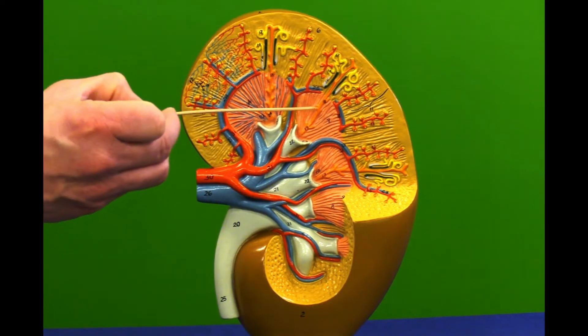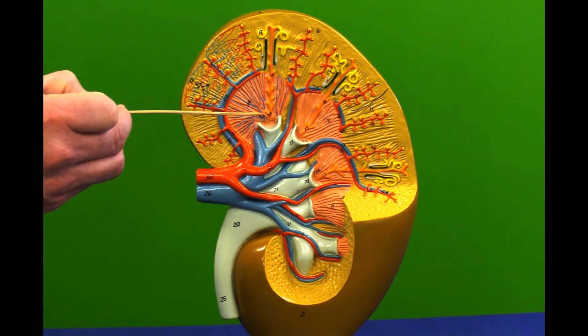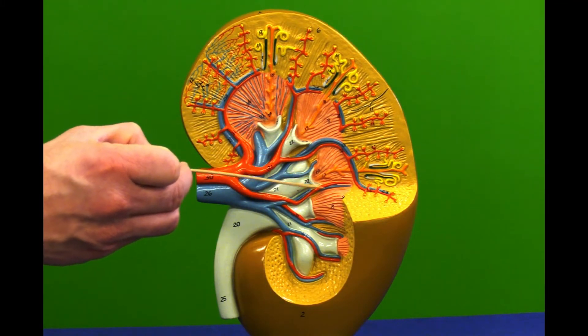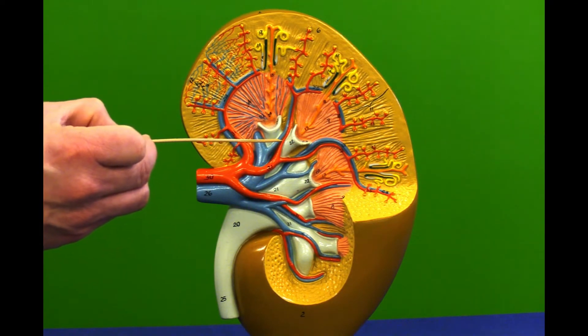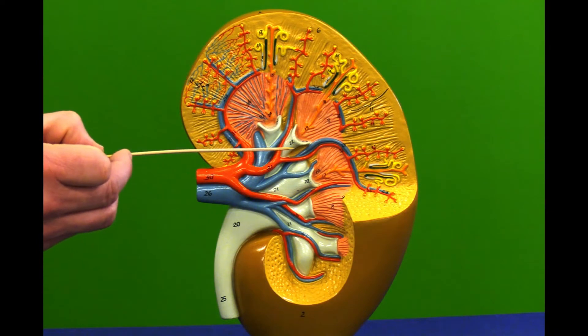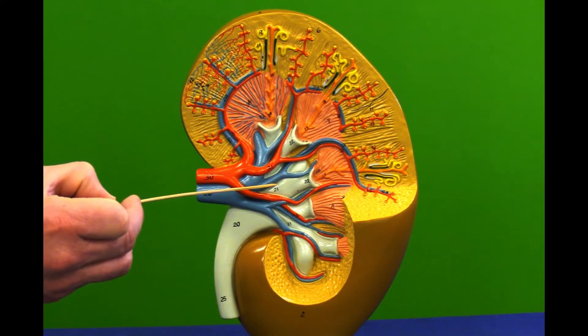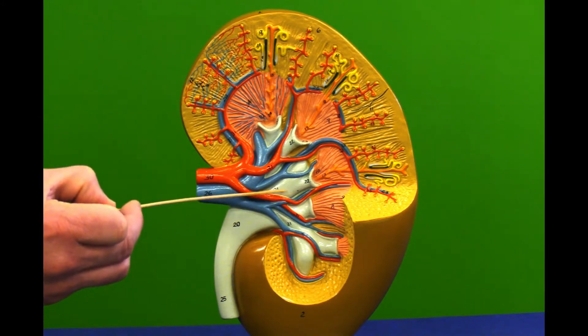Each pyramid flows down into a renal papilla and the renal papilla flows into the minor calyx. It's like a funnel system. The minor calyx is the small funnel funneling into the major calyx which is the bigger funnel.